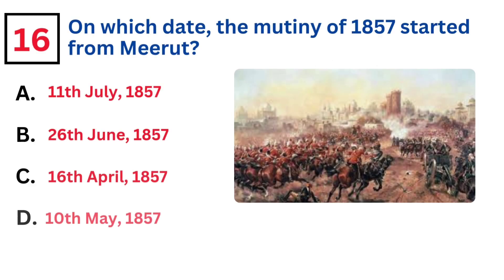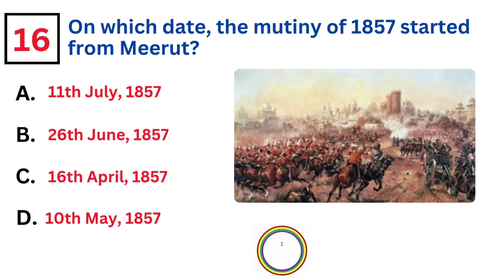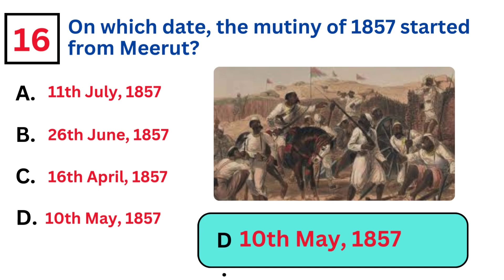On which date did the mutiny of 1857 start from Meerut? Answer D. 10th May 1857.